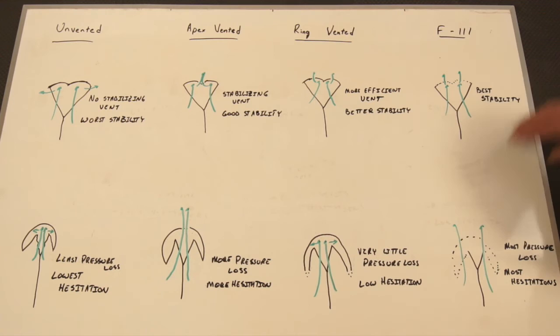F-111 pilot chutes vent air continuously along the entire porous top surface. That means they experience the very best stability of any pilot chute. They're more stable than any ZP pilot chute, no matter how well vented. But that also means they have the highest pressure loss and therefore experience the most hesitations of any pilot chute. Most jumpers using F-111 pilot chutes are using them for longer delays and are simply planning in the hesitation and pulling a second or so higher than on a comparable jump using a ZP pilot chute.